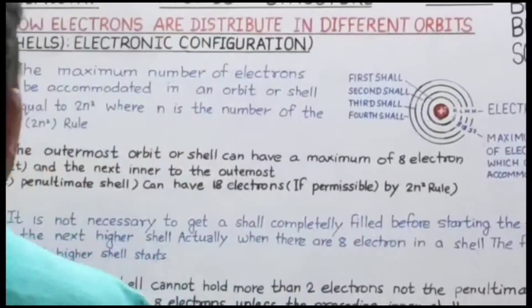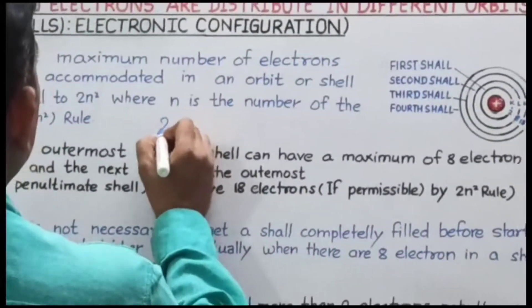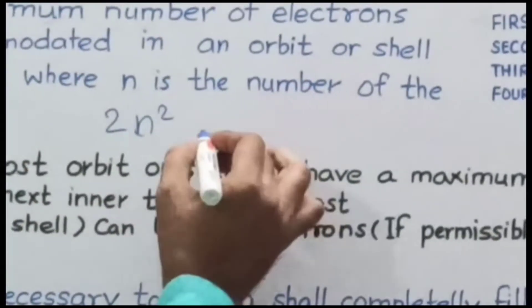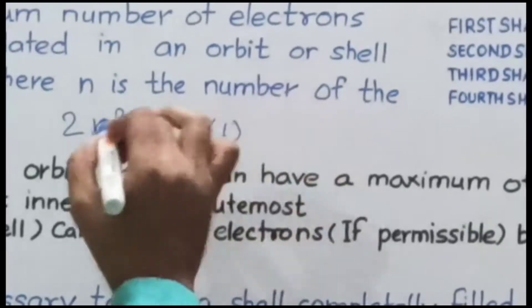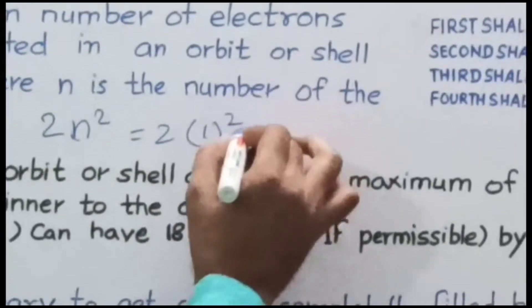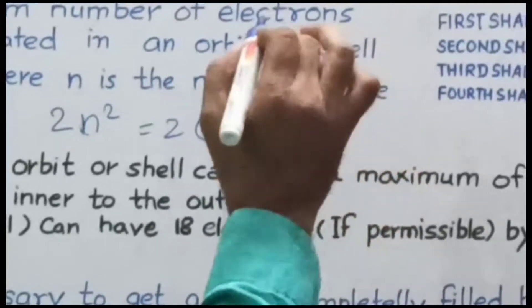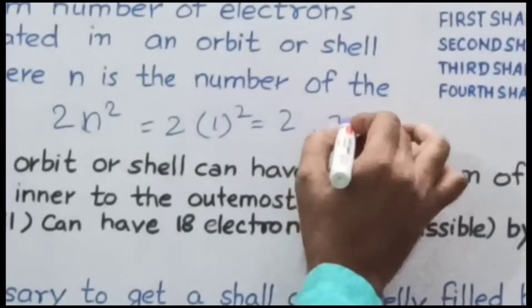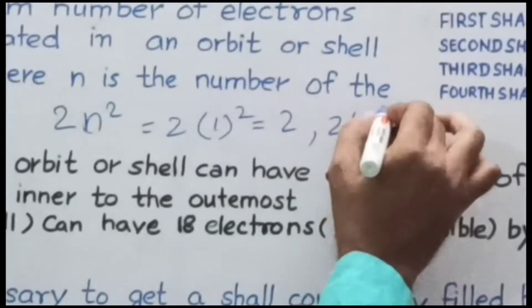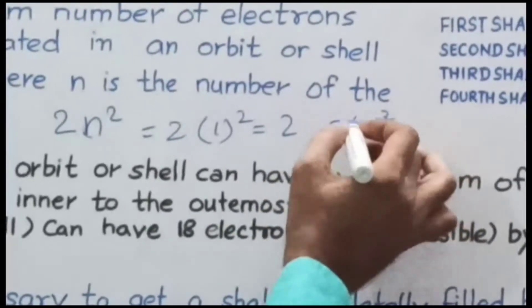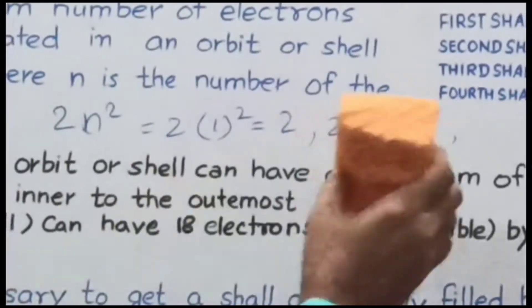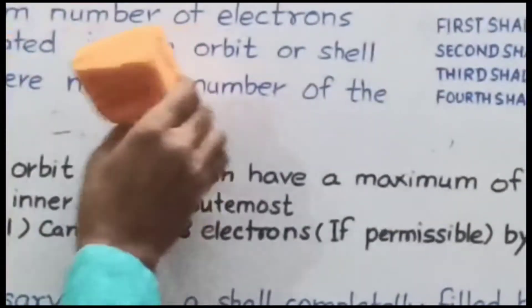अब मैं आपको एक example दिखाता हूँ। पहली shell के लिए 2n² में n=1 रखते हैं: 2×1² = 2। तो first shell में maximum 2 electrons आ सकते हैं। इसी तरह number of electrons बढ़ते जाएंगे जैसे-जैसे shell number बढ़ेगा।